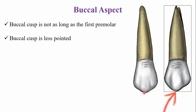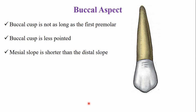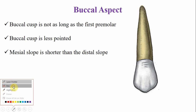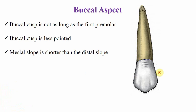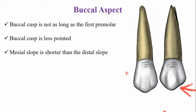The mesial cuspal slope is shorter compared to the distal cuspal slope. The opposite is true for the maxillary first premolar, in which the mesial cuspal slope is larger than the distal cuspal slope.